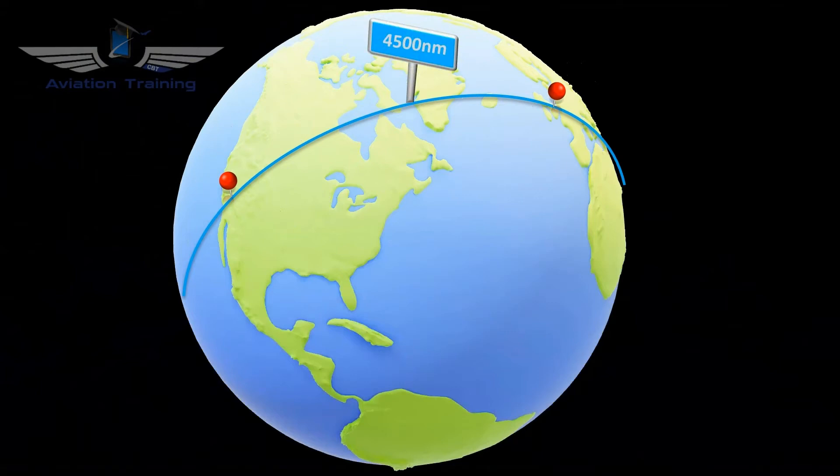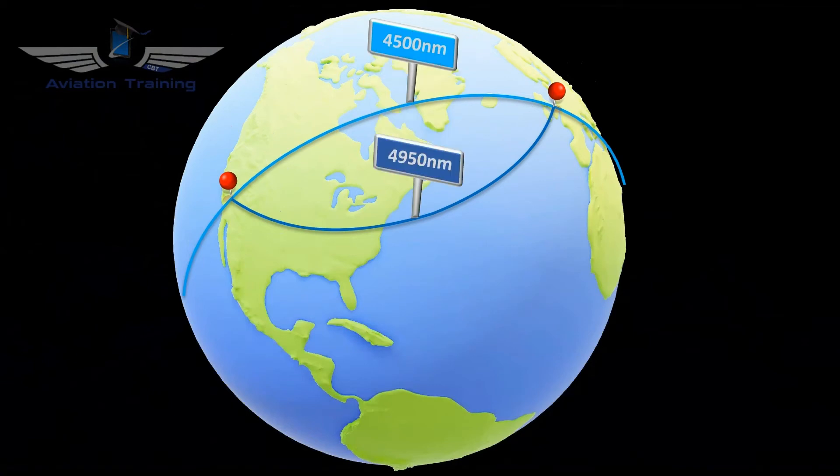However, if we want to fly a constant heading, the result would be the rhumb line, which intersects all lines of longitude at the same angle. And this distance would be 4,950 nautical miles, which is 10% further.